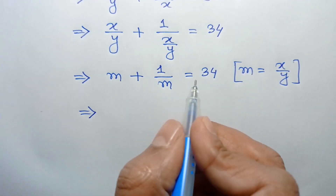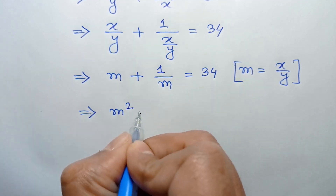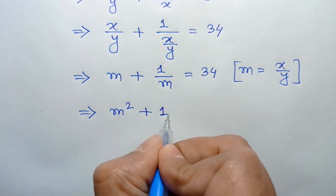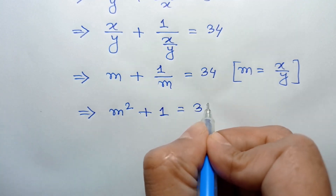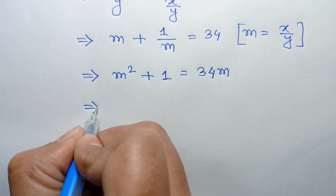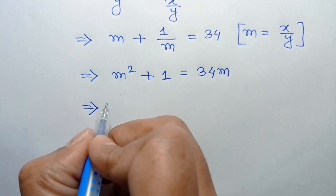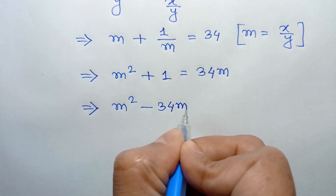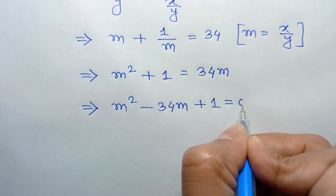Multiplying both sides by m, we get m times m plus 1 over m times m equals 34 times m, which gives m squared plus 1 equals 34m. Taking 34m to the left side, we can write m squared minus 34m plus 1 is equal to 0.